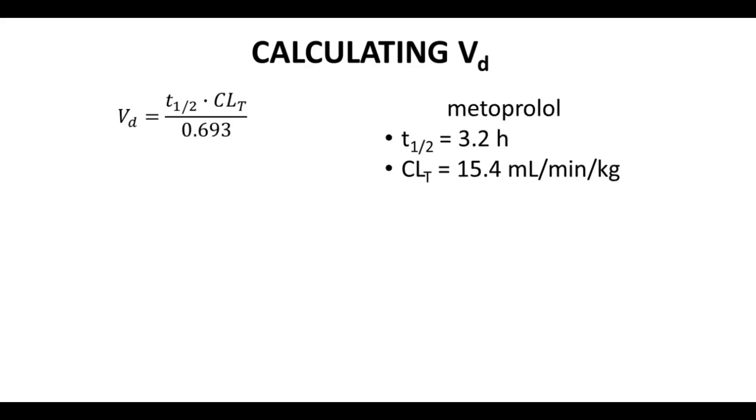Volume of distribution is calculated from clearance and half-life. Volume of distribution equals the product of half-life and clearance divided by 0.693. As always, be careful with units.